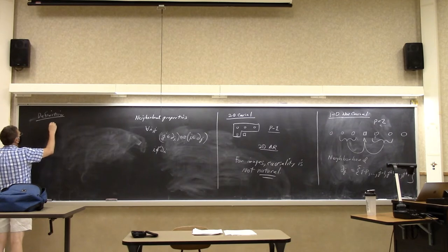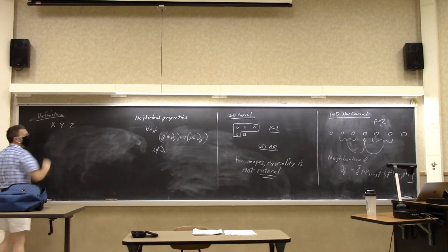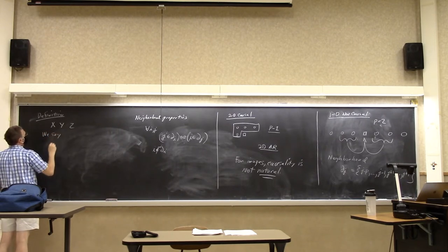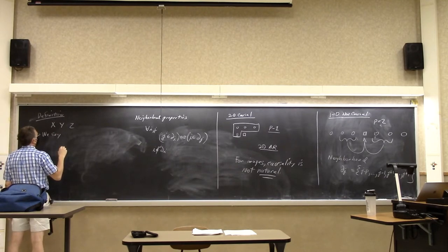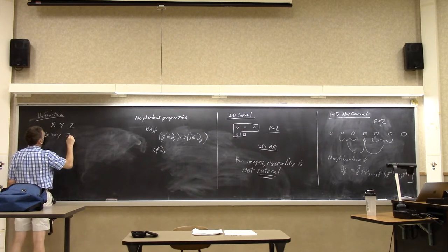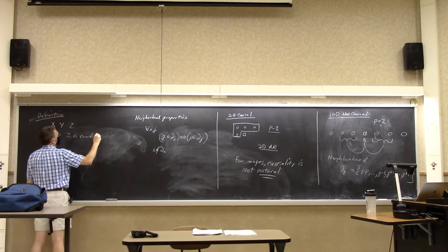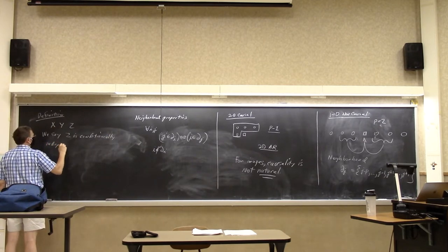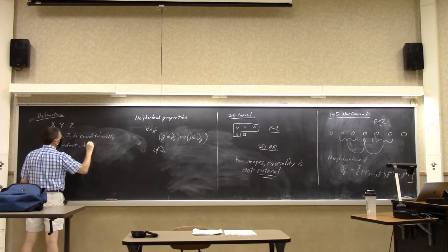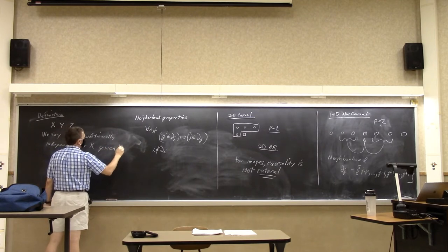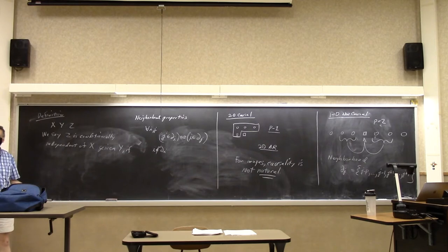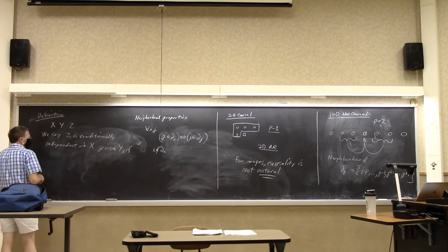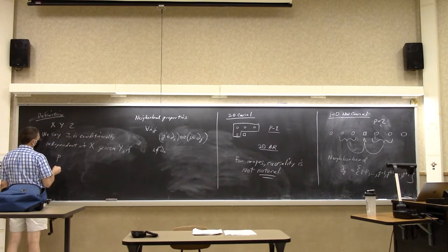Definition. We say that Z is conditionally independent of X given Y — and in a definition, 'if' means 'if and only if' — if the conditional density of Z given Y and X is equal to the probability density of Z given Y alone.